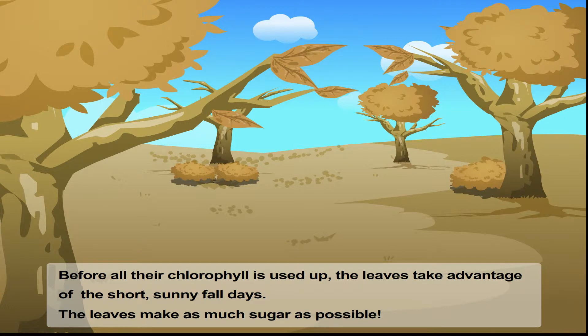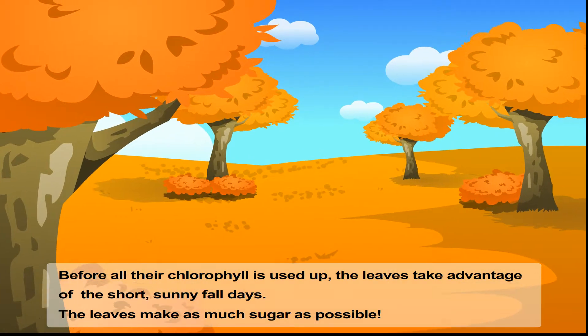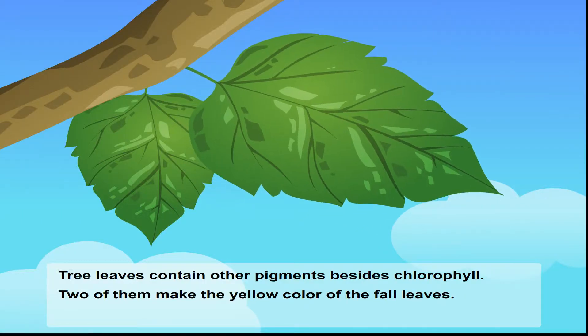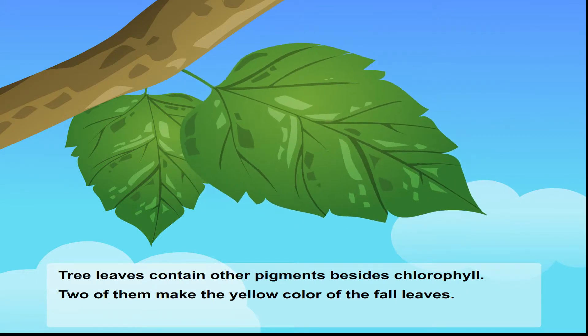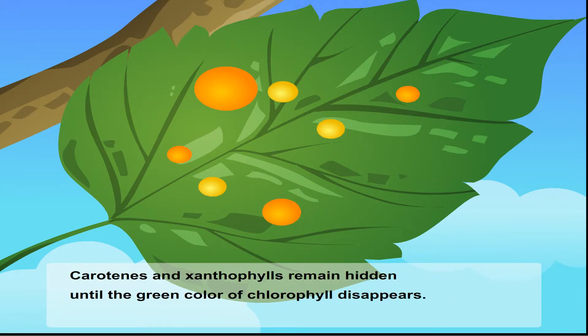Before all their chlorophyll is used up, the leaves take advantage of the short, sunny fall days. The leaves make as much sugar as possible. Tree leaves contain other pigments besides chlorophyll. Two of them make the yellow color of the fall leaves. Carotenes and xanophils remain hidden until the green color of chlorophyll disappears.